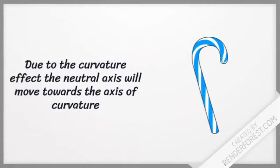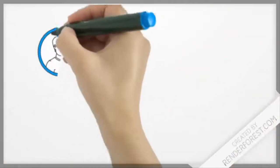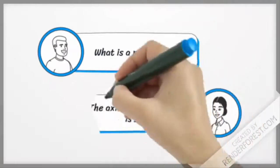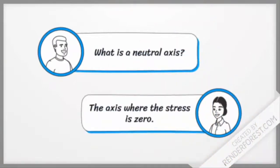Due to this curvature effect, the neutral axis moves towards the axis of curvature. This is a shifting of the neutral axis. What is the neutral axis? It's the axis where the stress is zero.